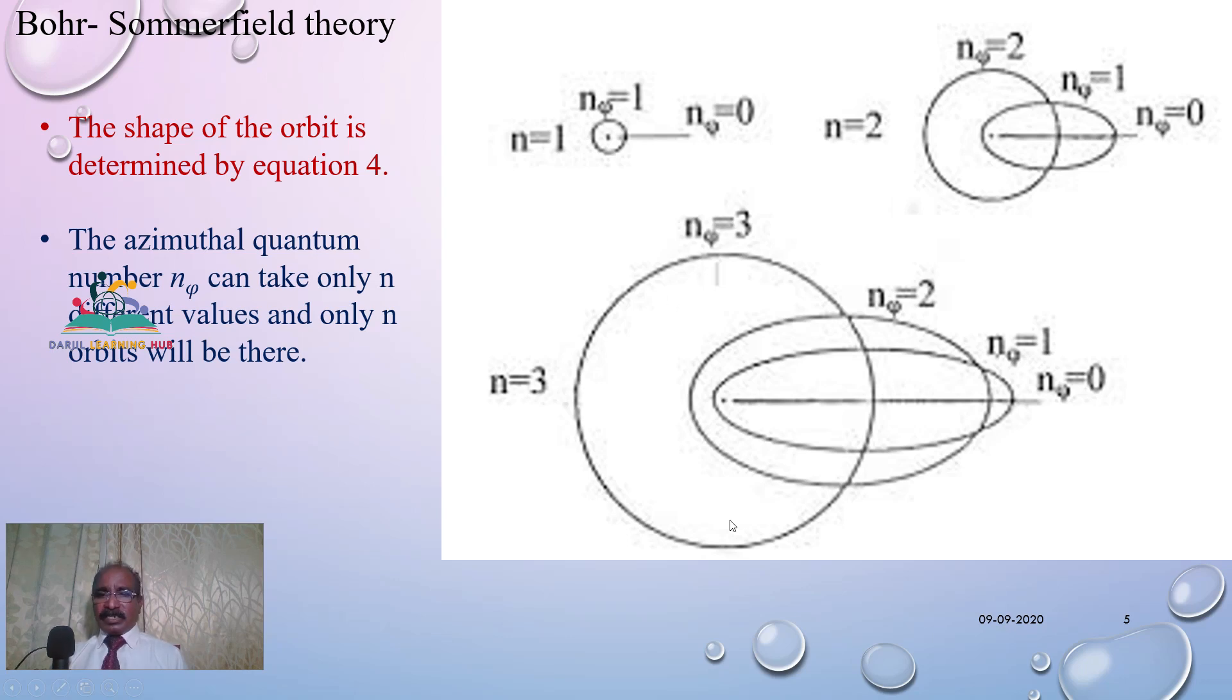And out of which, Sommerfield told one orbit will be a circular orbit and the other two will be elliptical orbits. In the same way, if we take n equal to 2, n_φ can also take two values, 1 and 2. Therefore, one is a circular orbit, another one is an elliptical orbit. If n equal to 1, n_φ will also be equal to 1. Therefore, only one circular orbit.